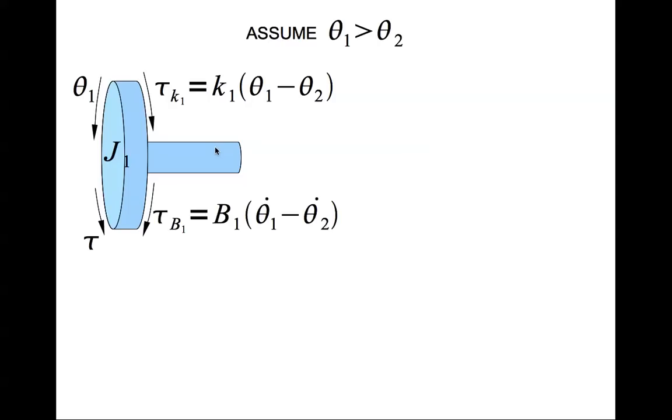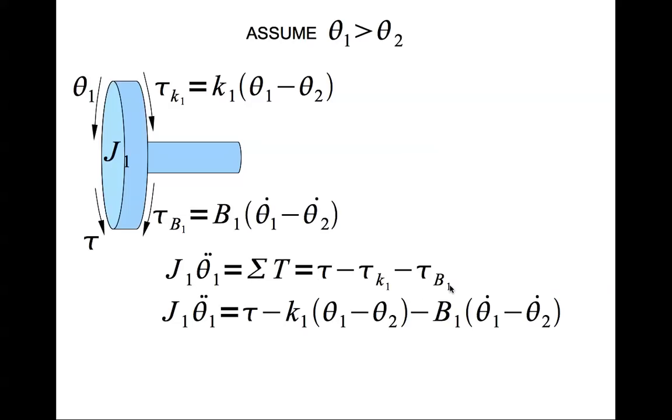Also there is the damping torque tau b1 which is b1 times theta 1 dot minus theta 2 dot. Theta 1 dot minus theta 2 dot is the rate of change of relative twist. We sum all the torques, so J1 theta 1 double dot equals tau minus tau k1 minus tau b1. Now we'll write theta 1 double dot explicitly like so.